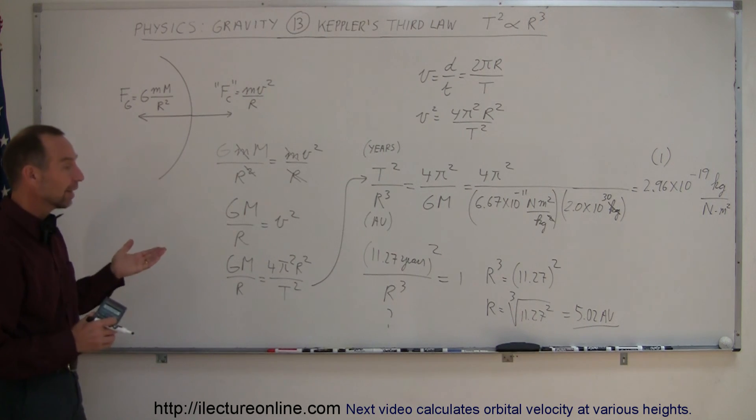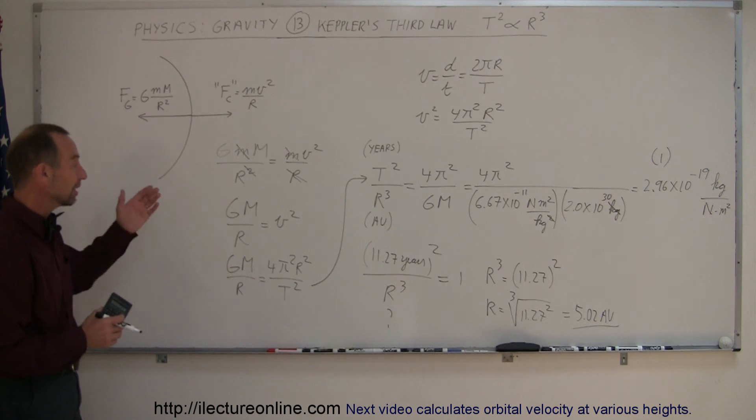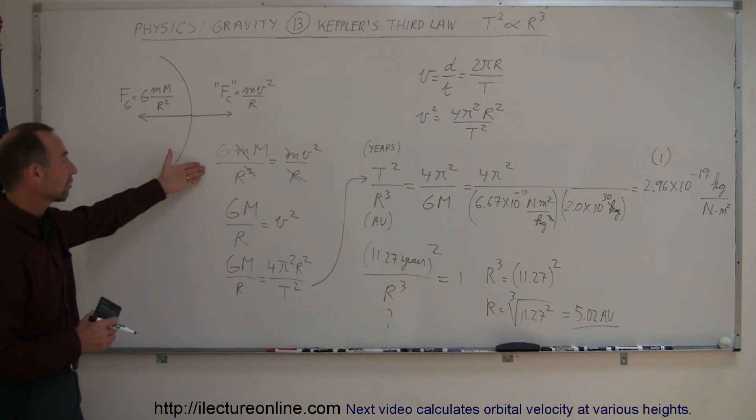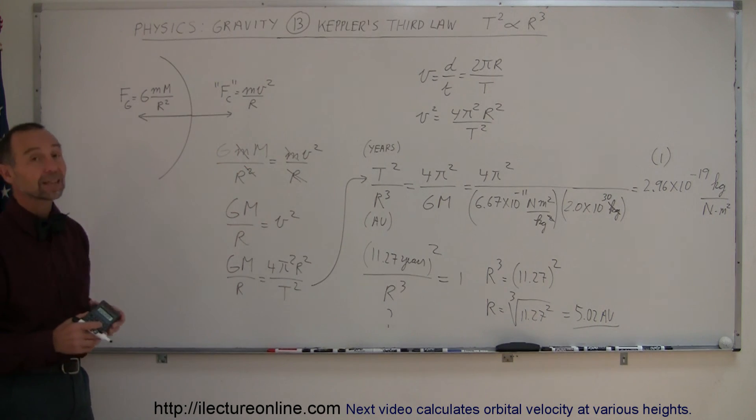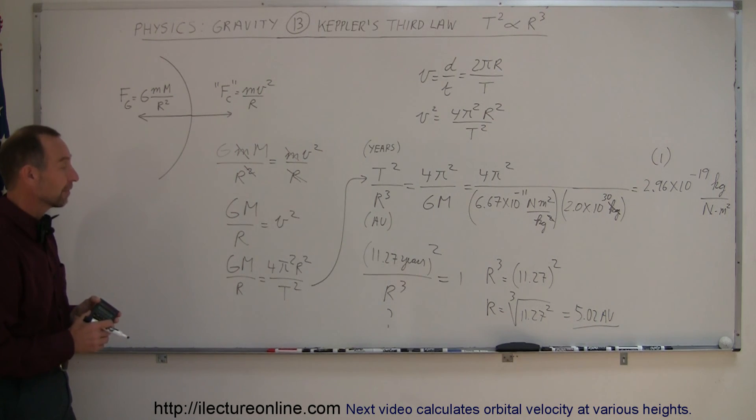So, once Kepler discovered that, we were now able to figure out the distance to the planets relative to the distance between the Earth and the Sun. Quite amazing, quite an amazing feat, and here you can see the physics that goes behind it. Now that we know the universal equation of gravity, we're able to prove that Kepler was correct. Very nice.